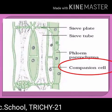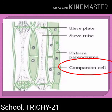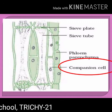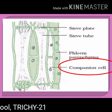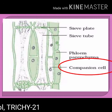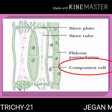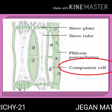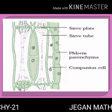Companion cells are elongated cells attached to the lateral wall of the sieve tubes. A companion cell may be equal in length to the accompanying sieve tube element, or the mother cell may be divided transversally to form a series of companion cells.